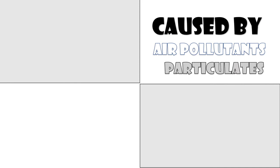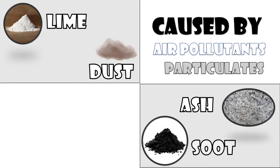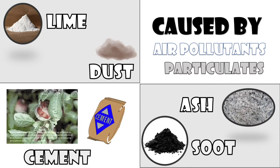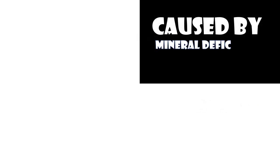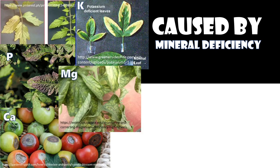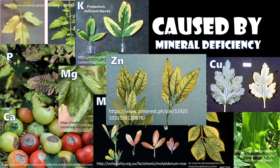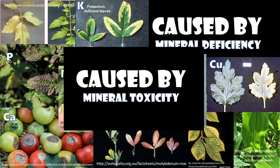Particulates such as lime, dust, ash, soot, and cement from burning fields or trash, cement factories, lime kiln operations, combustion of fuel oil and coal, and volcanic eruption cause necrotic lesions in covered areas. Minerals: Diseases from lack of minerals necessary for different physiological processes — such as nitrogen, phosphorus, and potassium — cause chlorosis, purpling, rot, etc. Excessive levels of certain elements also affect the solubility and availability of other elements.